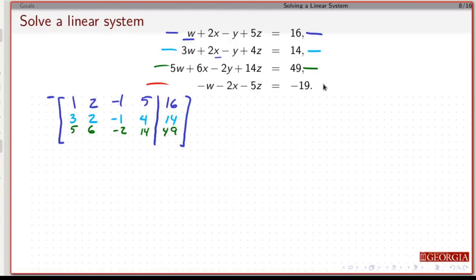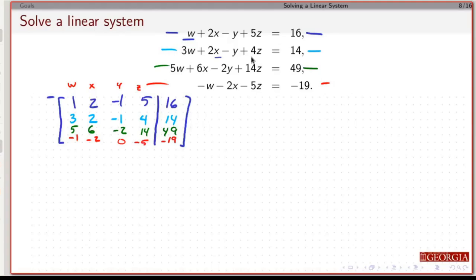And then for the last row — I have to be careful here. So the columns are w, x, y, z. The coefficient on w is minus 1, the coefficient on x is minus 2, the coefficient on y is 0, and the coefficient on z is minus 5, and that's all equal to minus 19.